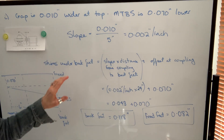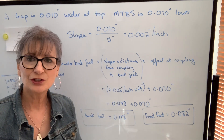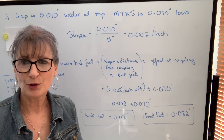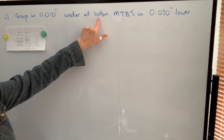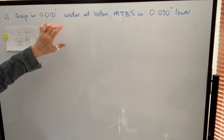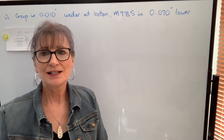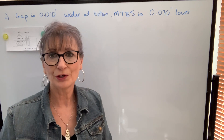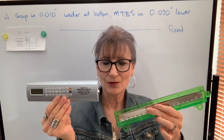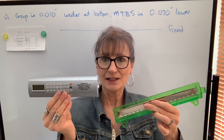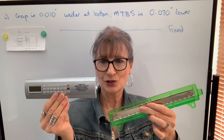When the gap is wider at the top, we call that a positive slope. Now let's look at an example where the gap is wider at the bottom — that's a negative slope. The gap difference is still ten-thousandths and the machine to be shimmed is still seventy-thousandths lower. The gap is wider at the bottom, so notice how it's sloping — it's seventy-thousandths lower plus the gap is wider at the bottom.